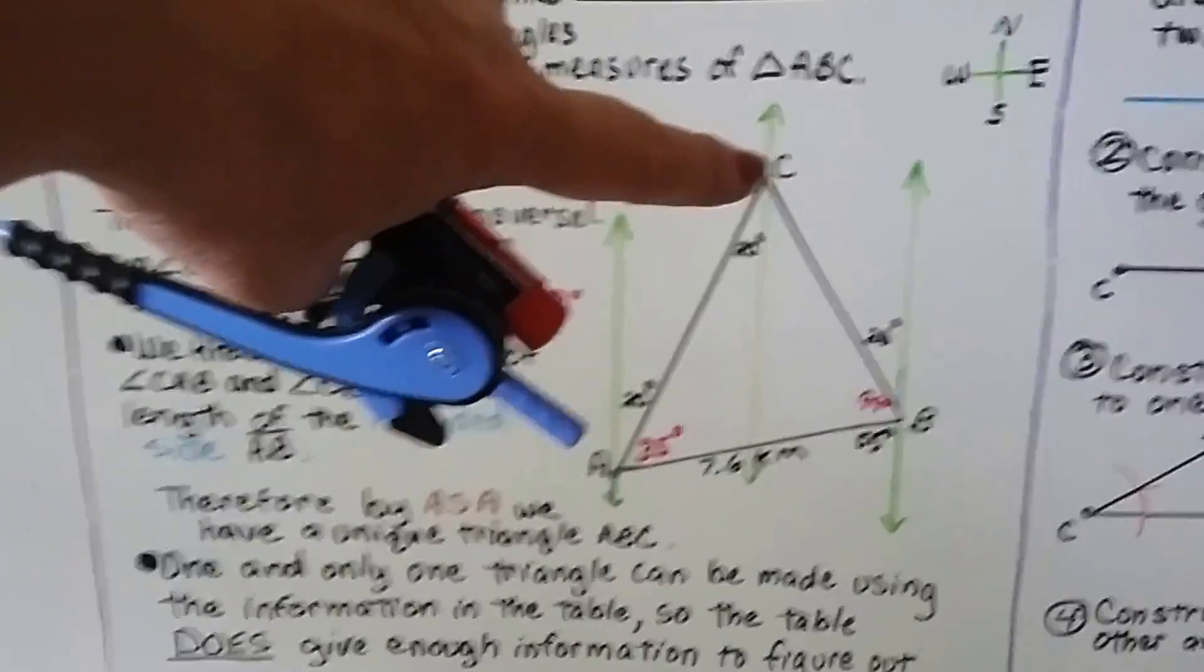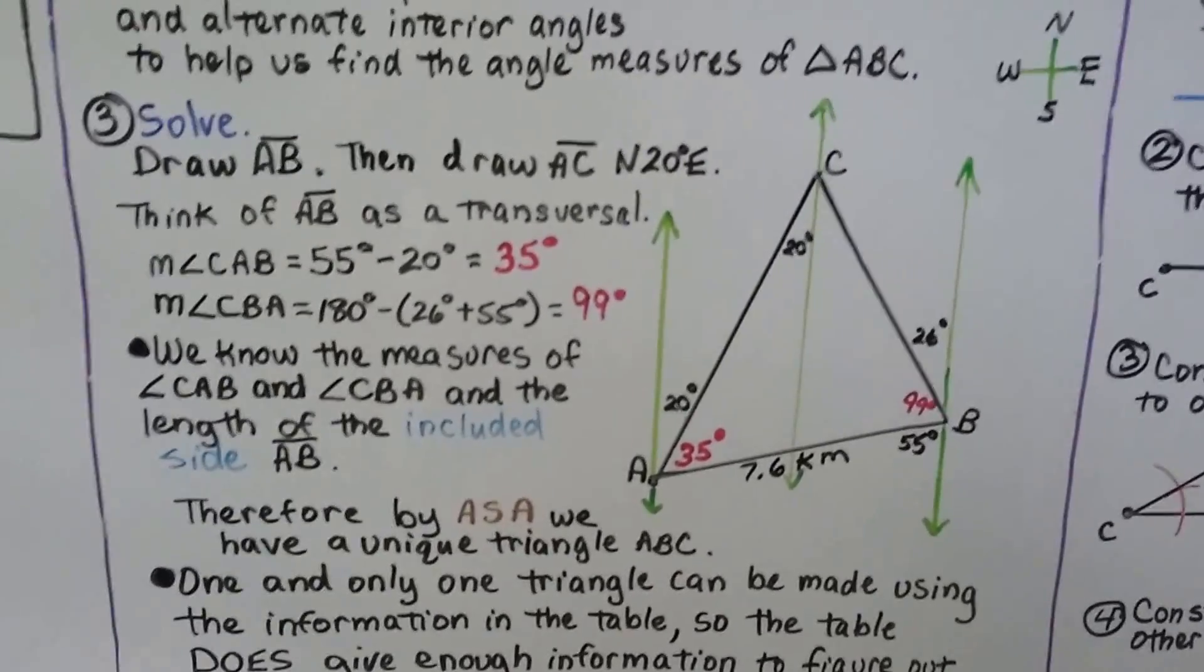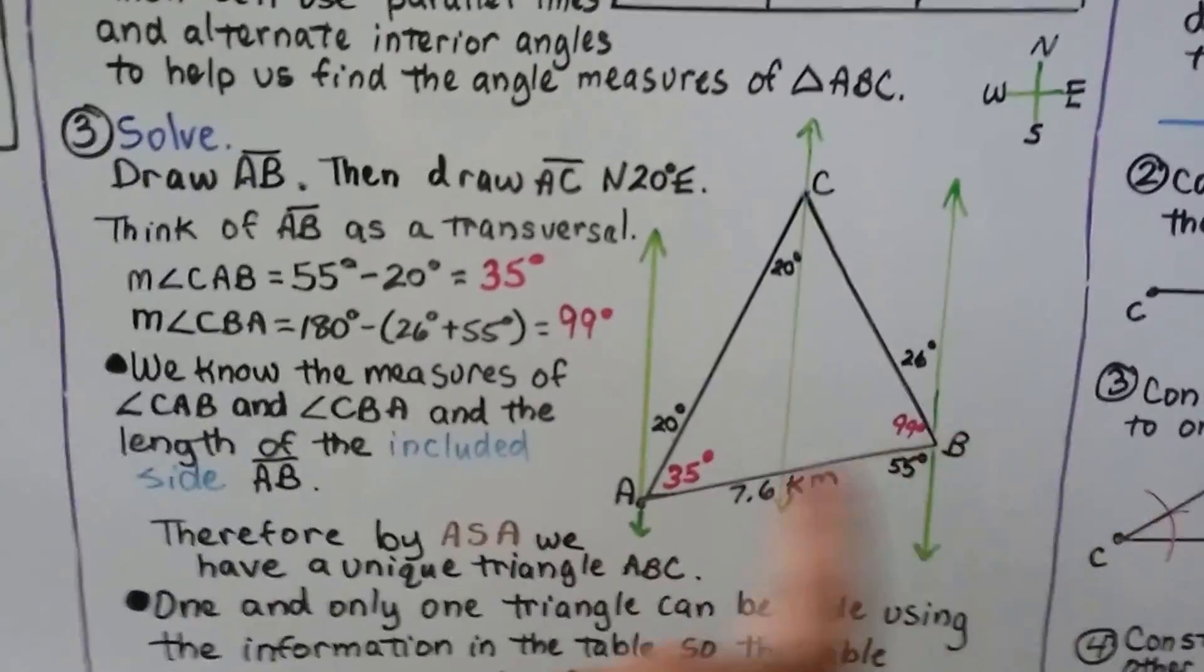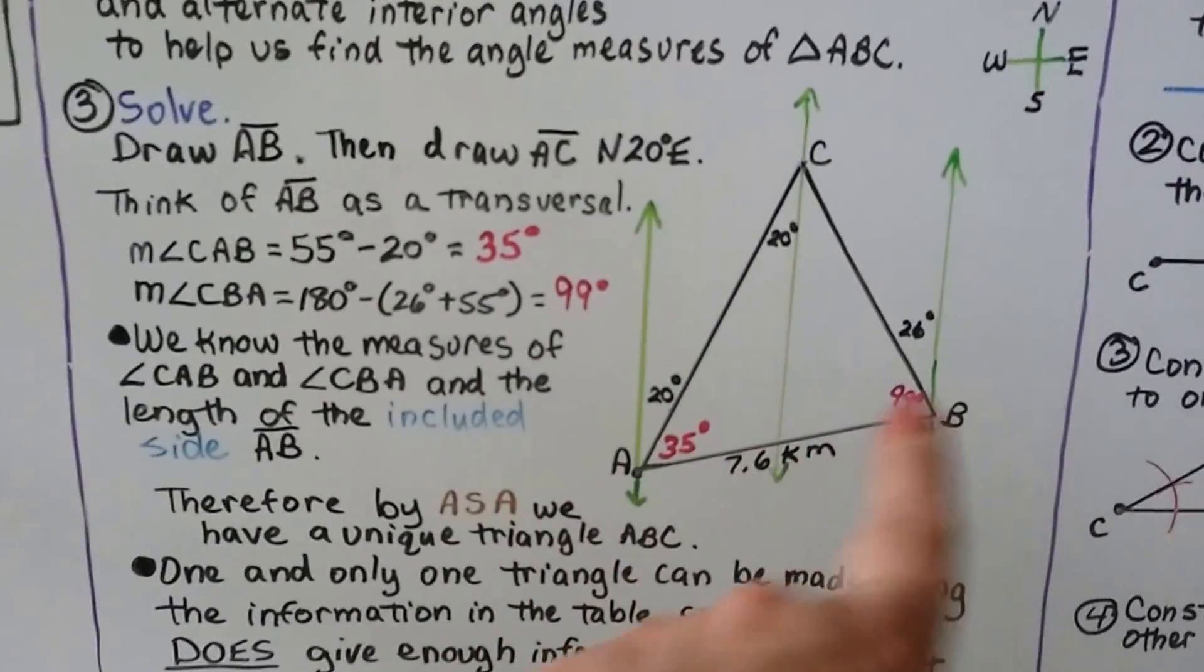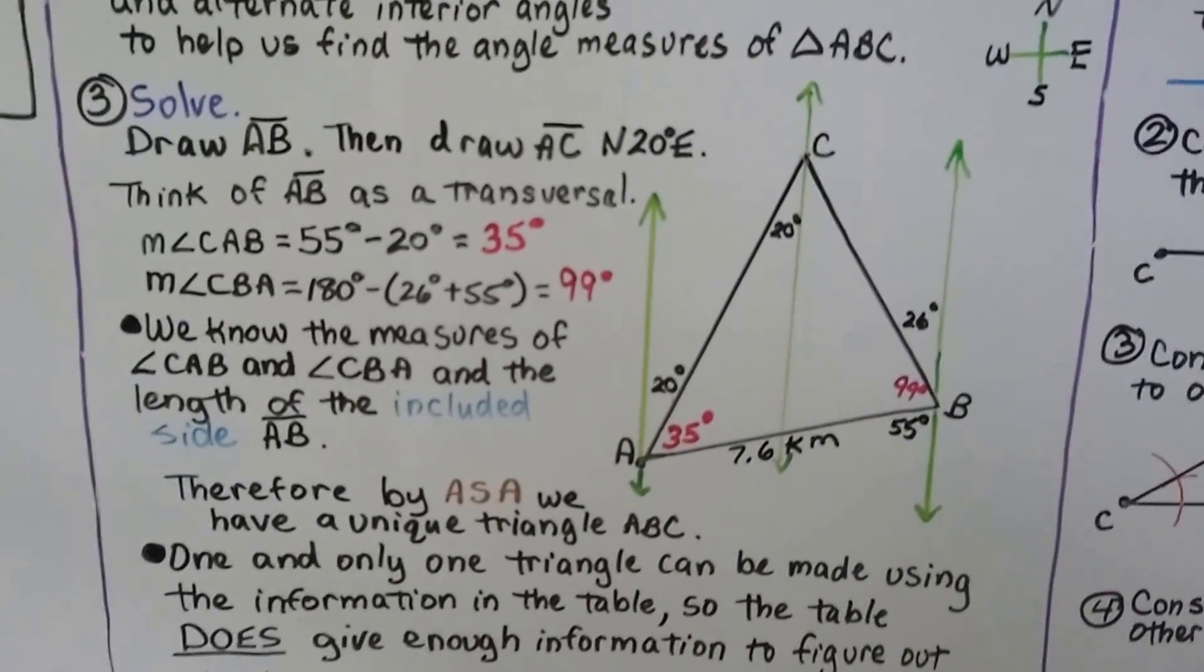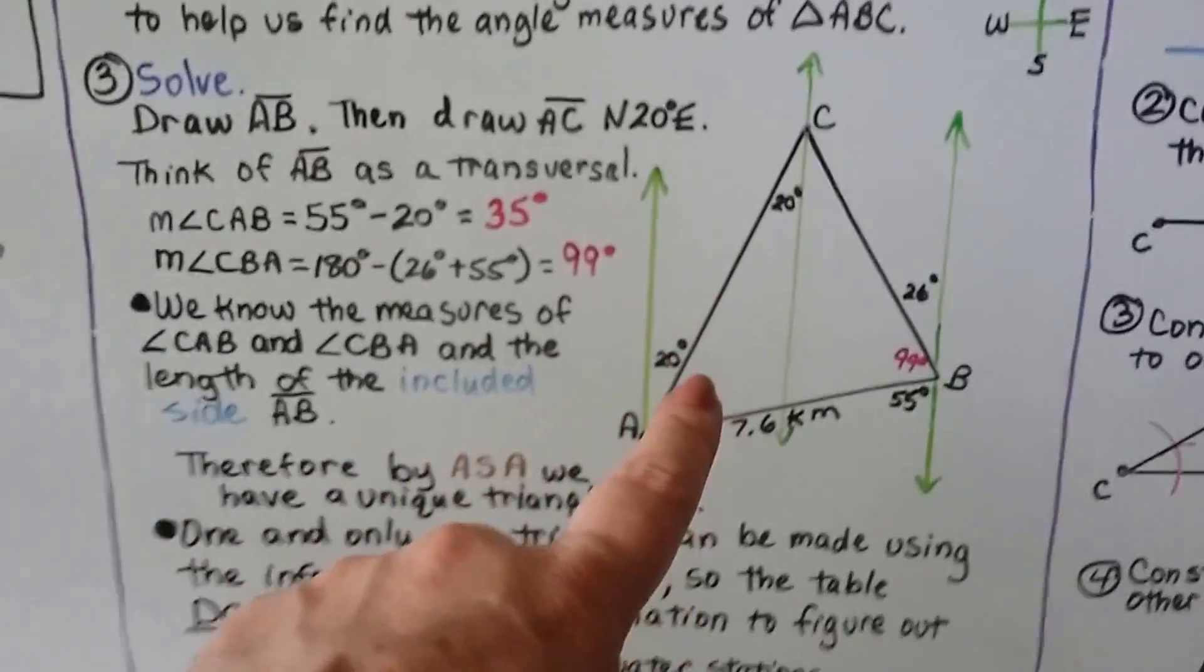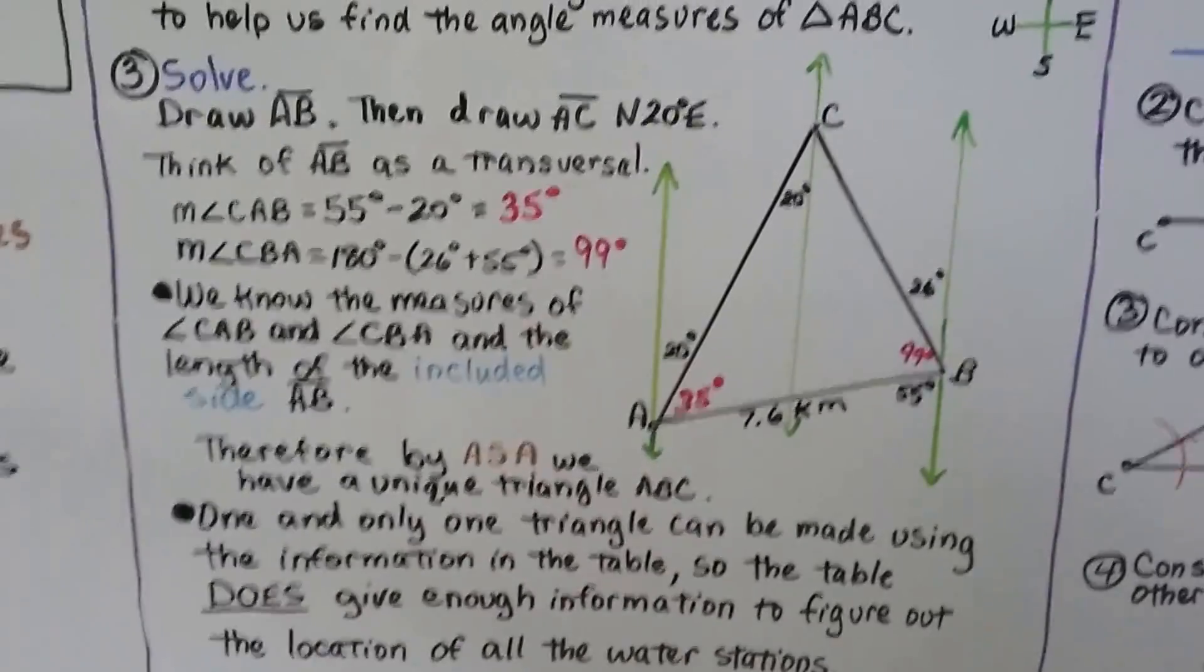The measure of angle CAB is equal to 55 degrees minus 20 degrees, because we're thinking of AB as a transversal cutting these two parallel lines. This angle and this angle are alternate interior angles. If this is 55 degrees, then this must equal 55 degrees. But we've only got 20 here, so we do 55 degrees minus 20 equals 35 degrees. So now we know that is 35 degrees.